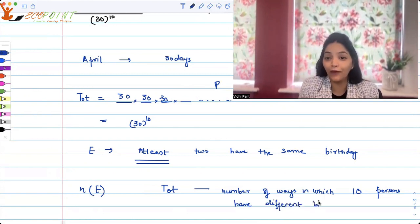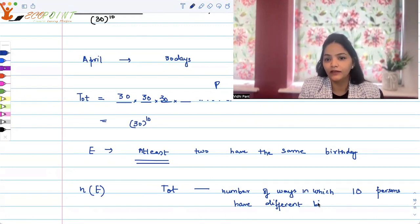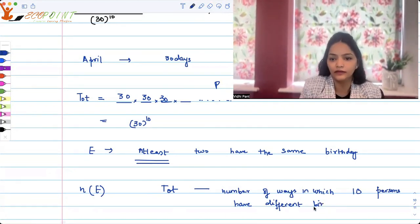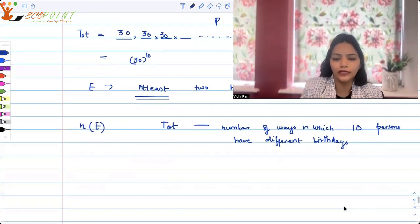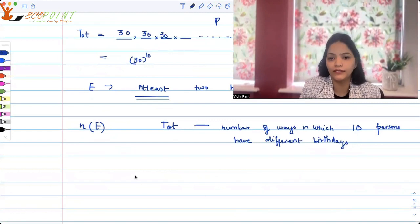Because if all of them are not sharing their birthday, if they have no common birthdays, then that means no two people are sharing birthdays. So you will get the at least case. They all have different birthdays. So the best way to get the answer would be total minus the number of ways in which all of them have different birthdays.